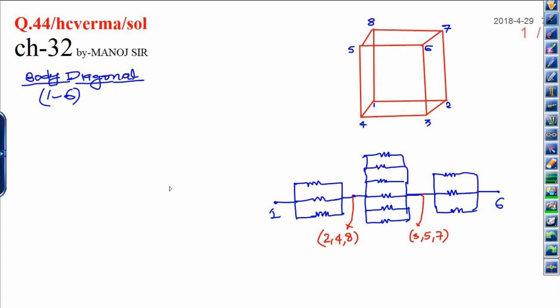Twelve wires are given, each having equal resistance small r, are joined to form a cube. Find the equivalent resistance between the diagonally opposite points. You can choose any one. Right now, I am just choosing 1 and X.